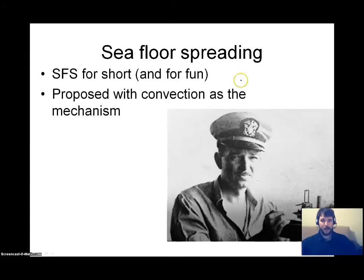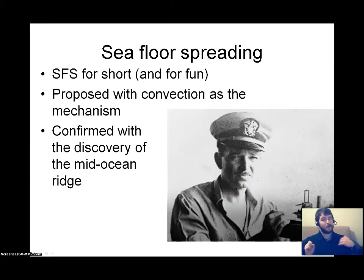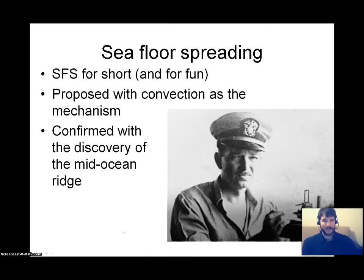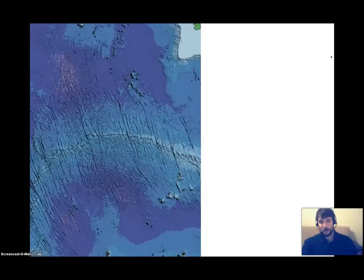And then this guy, Henry Hess — there he is all pretty and Hess-like — he actually came up with this whole idea after discovering the mid-ocean ridge and published it in the 60s. He was actually able to come up with the mantle convection current as the mechanism, so now we have a mechanism to go with the idea, and the scientists are happy. Wegener was way back in the 1910s, World War I era. Hess took till after World War II before he finally published his ideas and they were accepted by the scientific community.